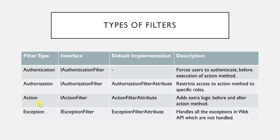The next type of filter is the action filter. It allows you to add extra logic before and after the execution of an action method. Whatever logic you put there gets executed either before or after your action method runs. There is a default implementation available called ActionFilterAttribute, but if you have a custom requirement you can implement IActionFilter.